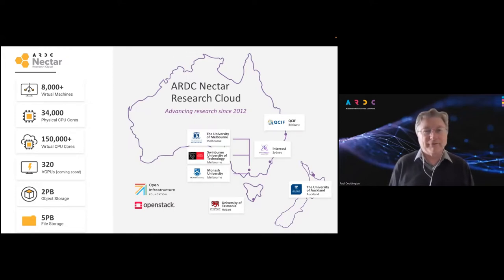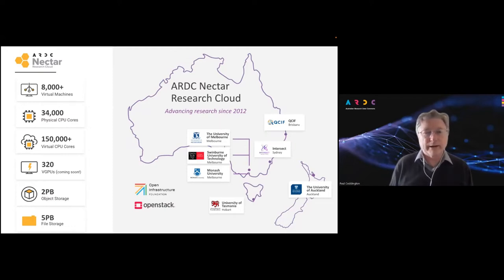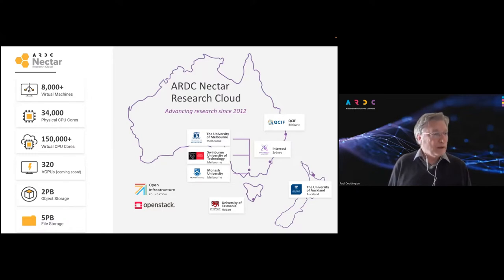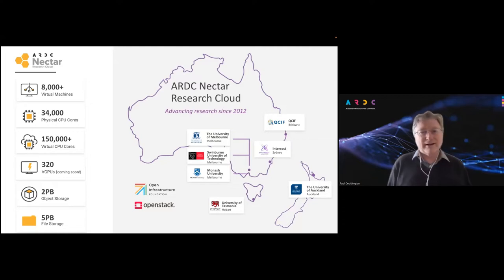The Nectar Cloud has been around for 10 years now. It's run by the ARDC, the Australian Research Data Commons. It's actually a federation of several partner organisations or nodes. The nodes are responsible for running the infrastructure — the compute and storage hardware, including GPUs and large memory servers. ARDC's core services team runs the central cloud services that glues it all together into a federation that looks like a single cloud service. It's quite a large resource with a large number of physical and virtual CPU cores, quite a lot of storage — both object and volume/file-based — and a large number of GPUs, some already in place and some still on the way.